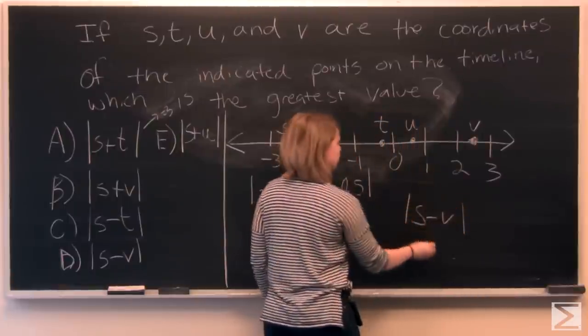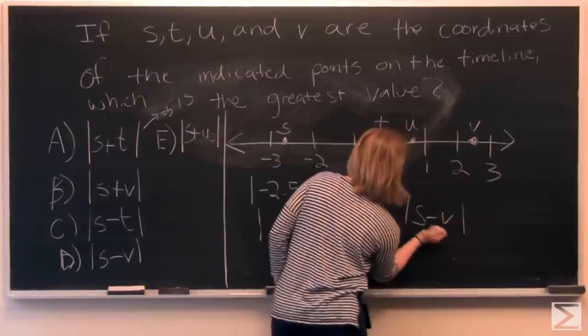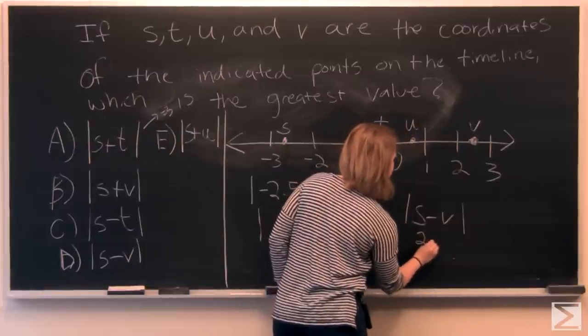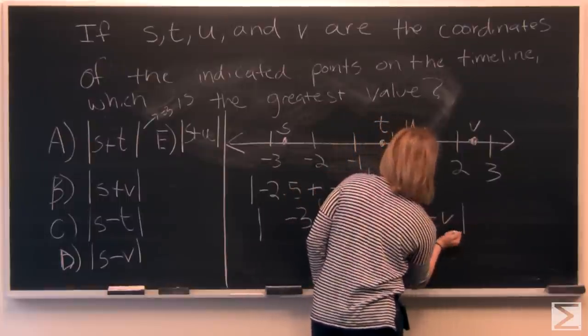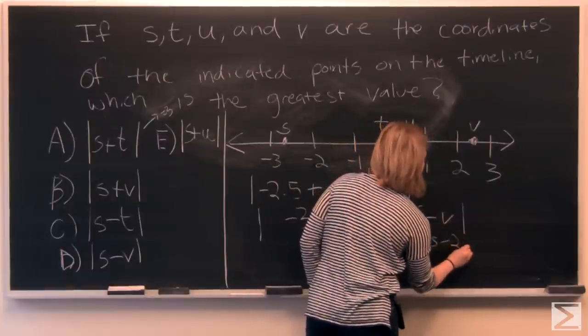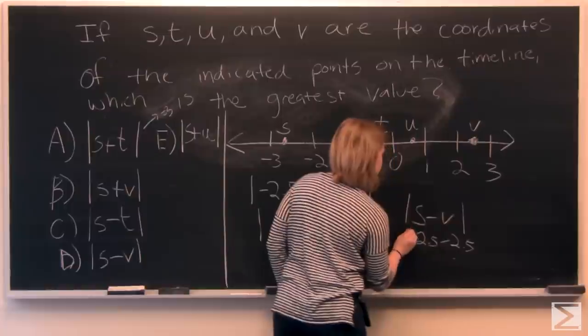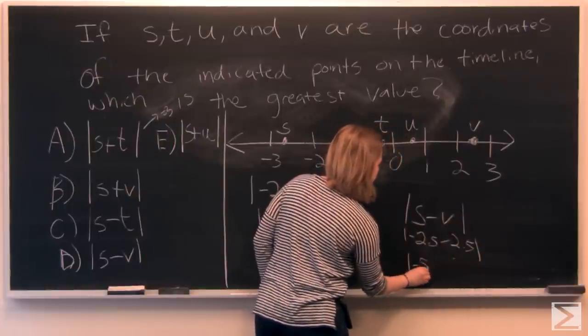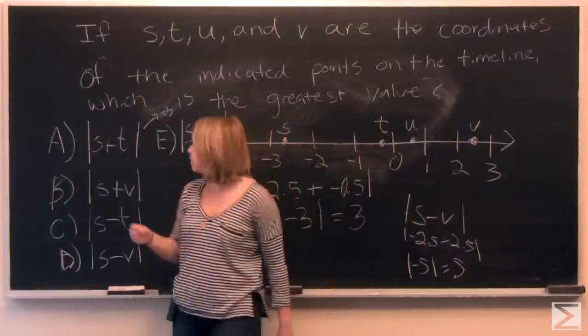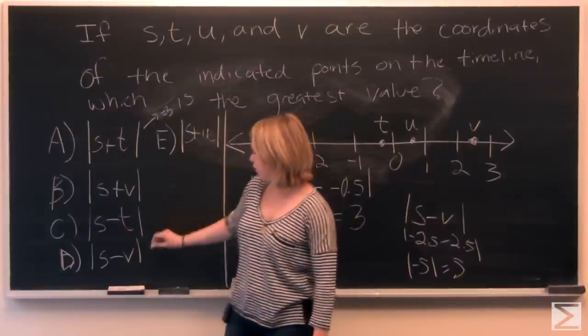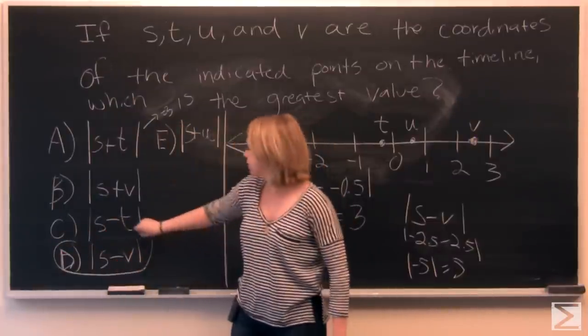So S minus V. So we'll call S negative 2.5 again. And V will be positive 2.5. And this gives us the absolute value of negative 5, which will become positive 5. And we'll find that this is our answer.